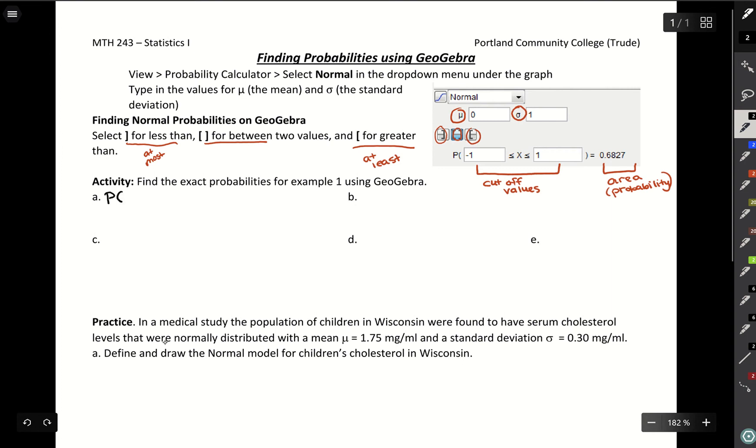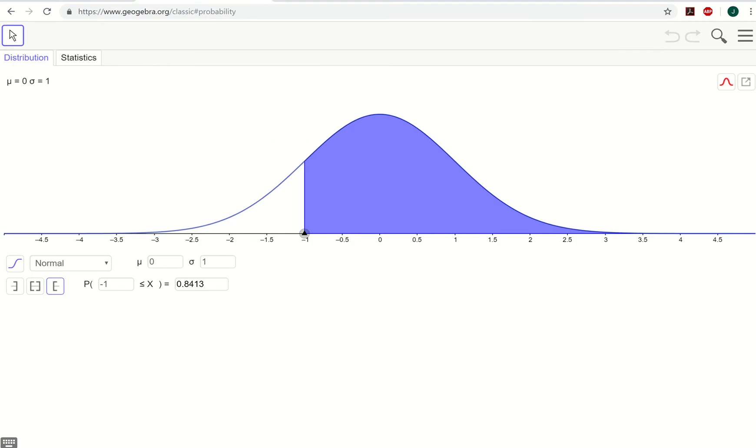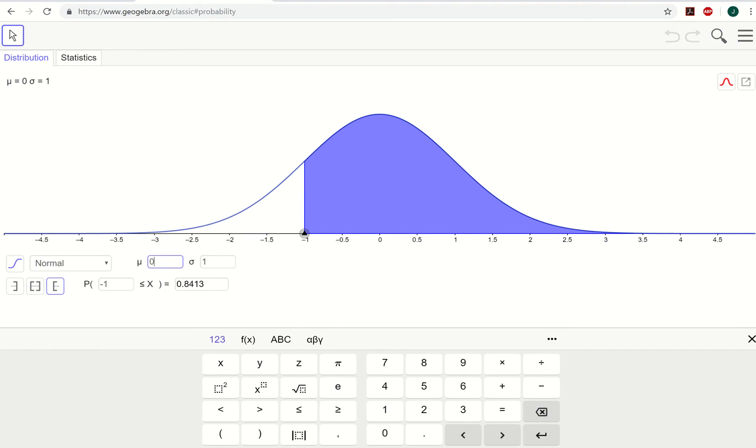We looked at finding the probability between 32 and 48, and this was with our normal curve, mean of 40, standard deviation of 8. So if we go into GeoGebra, we'll need to change our mean and standard deviation. Instead of a mean of 0, we'll have a mean of 40. Instead of a standard deviation of 1, standard deviation of 8.